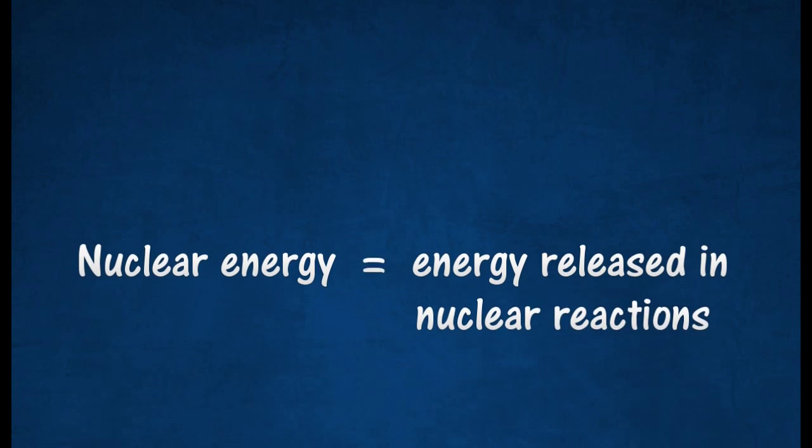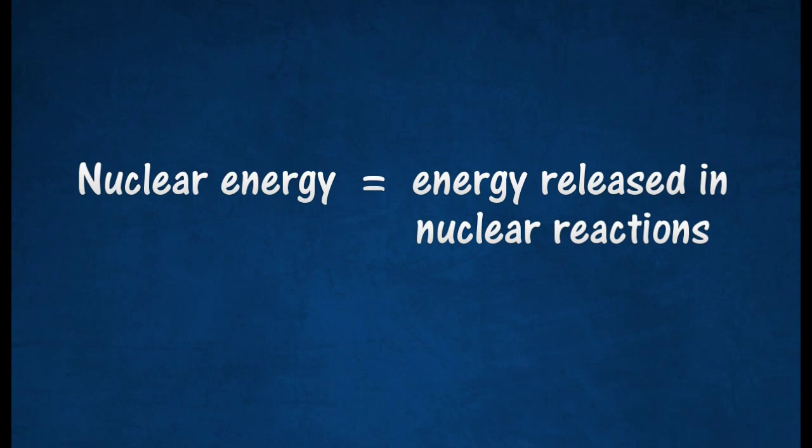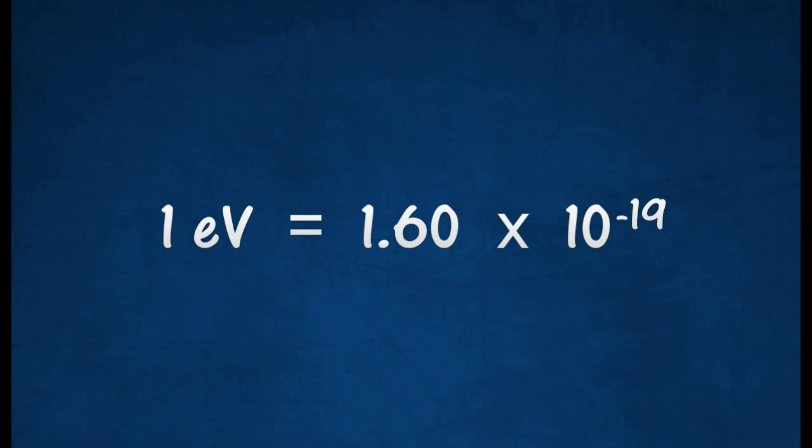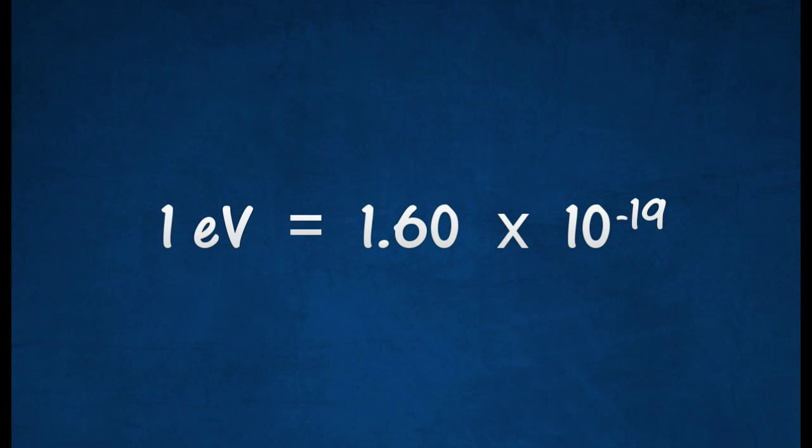The energy released in nuclear reactions is known as nuclear energy. Nuclear energy can also be measured in electron volts. The electron volt is defined as the energy acquired by an electron moving through a potential difference of one volt.